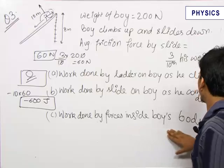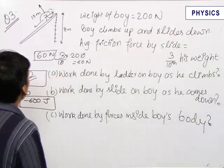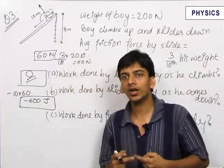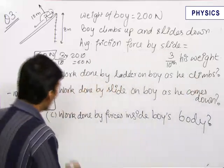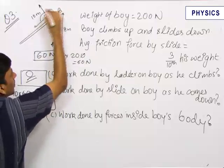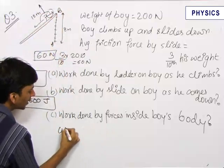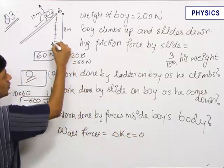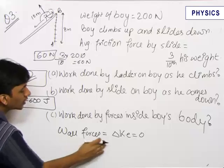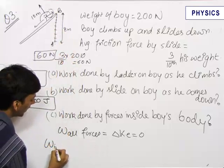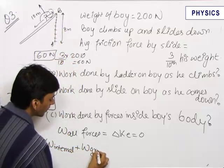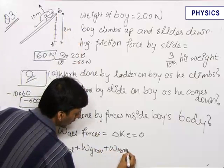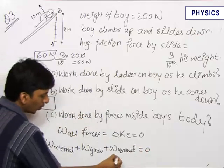Now we need to find out the work done by forces inside the boy's body. Since a man is not a rigid system, his internal forces can do work — only in the case of non-rigid systems can internal forces do work. As the man climbs from A to B, the forces acting and doing work are: work done by internal forces plus work done by gravity. The normal force does zero work, so work done by normal is zero.